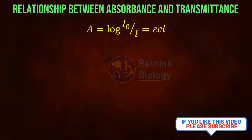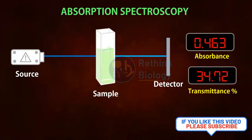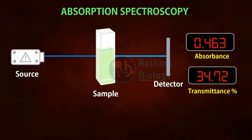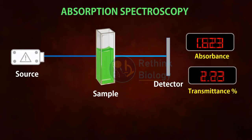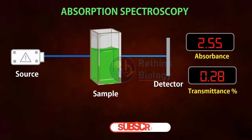In a spectrophotometer, you can get both the reading of absorbance and transmittance. If we increase the sample concentration, the absorbance increases while the transmittance decreases. Similarly, if we increase the path length, the absorbance increases and the transmittance decreases further.